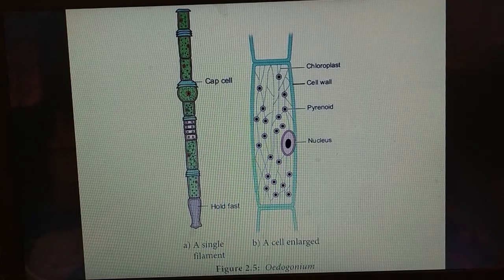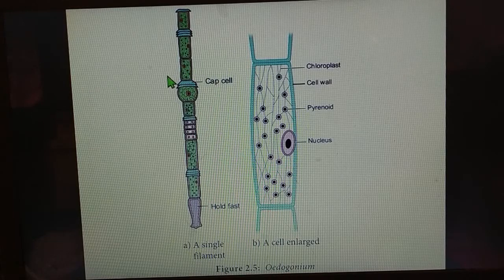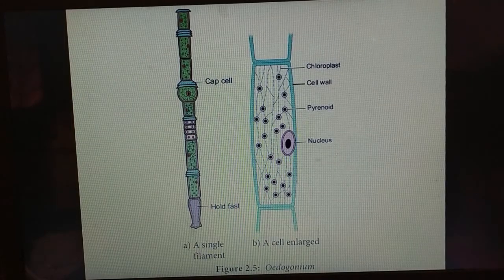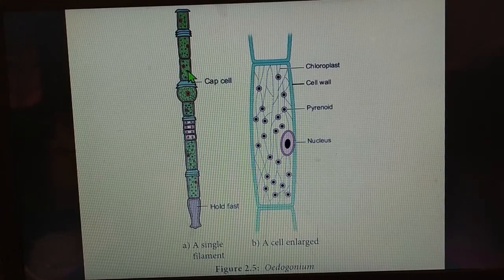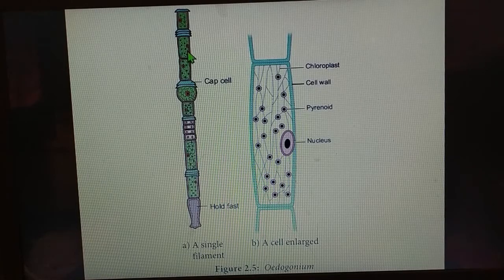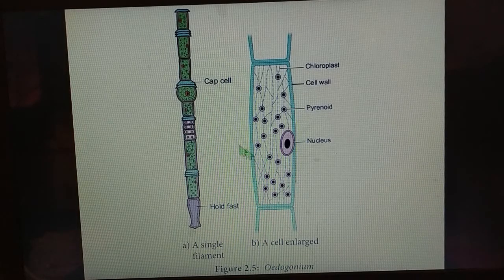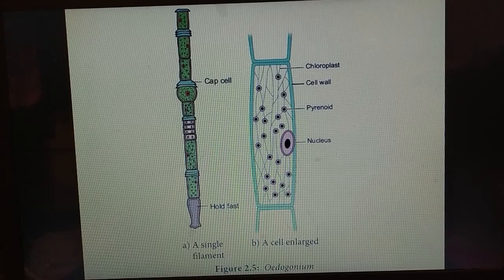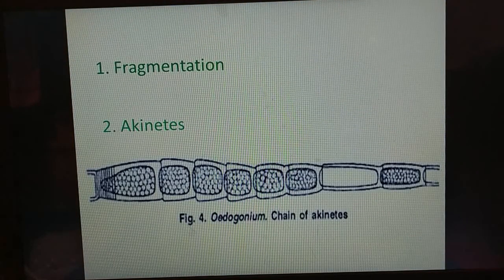Fragmentation occurs by either the accidental breaking of intercalary cells, or it may be due to the dying of fragments or dehydration of the intercalary cells. Due to this process, small fragments are formed, and under favorable conditions those fragments will grow into complete filaments.